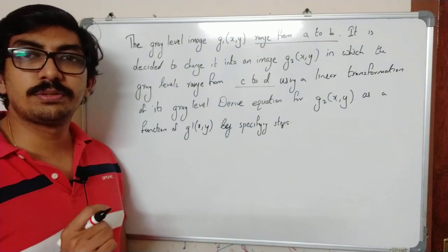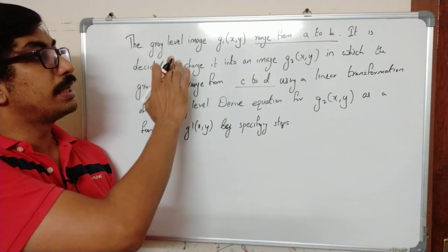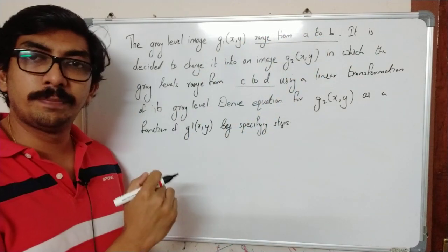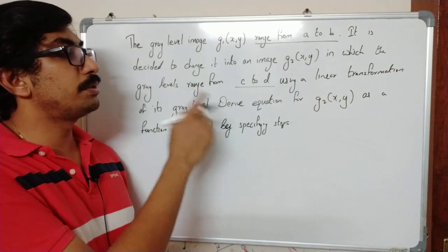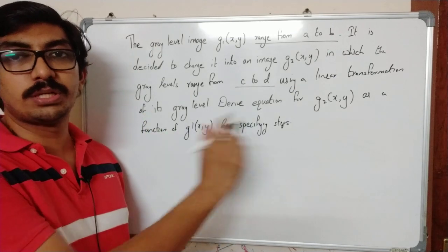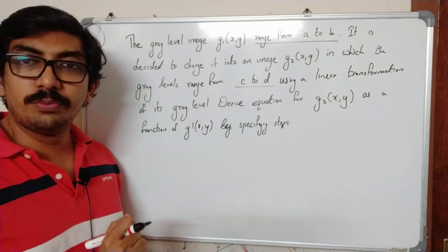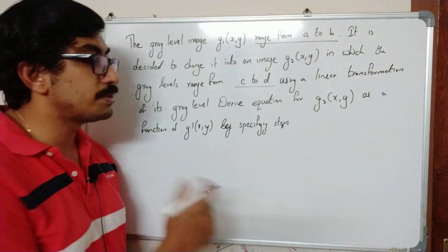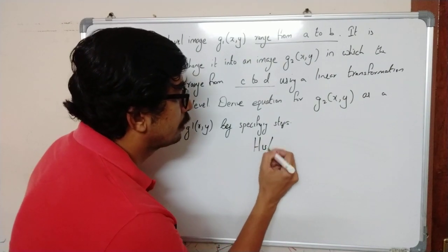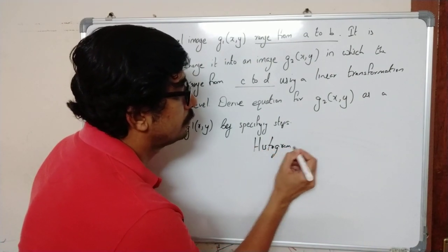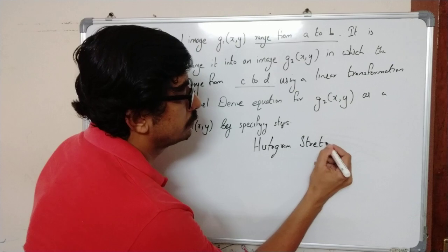So the question is like this: you are given an image with a gray level intensity ranging from A to B and using a linear transformation you have to convert it to C to D. To do this we can use a technique called histogram stretching.